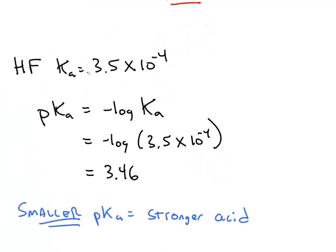You can look up Ka values. For example, hydrofluoric acid, weak acid. Ka is 3.5 times 10 to the negative fourth.